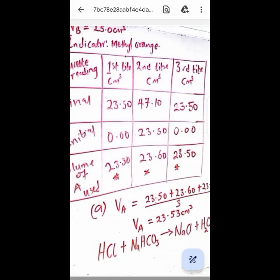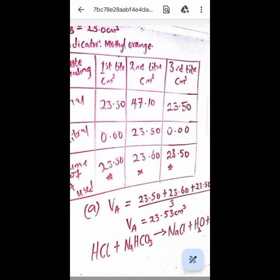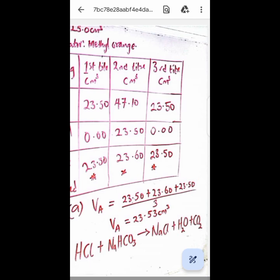So now the calculation part has been done. So look at the table here. So from the titre value we got, which is 23.5, we did the second and we got 23.6 and the third one was 23.5. Those are the asterisk ones. They are the volume of A used in the three titrations.